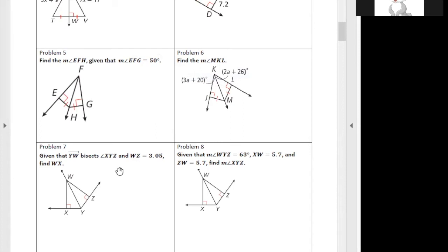Is the answer for number 7? I didn't do number 7, I'm doing it. I think it's the converse of the perpendicular bisector. Oh sorry, it's the angle bisector. Yes, converse angle bisector. So WZ equals WX. So WX is 3.05. Yeah. Okay, 3.05.